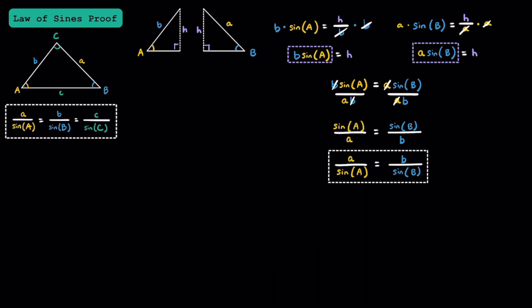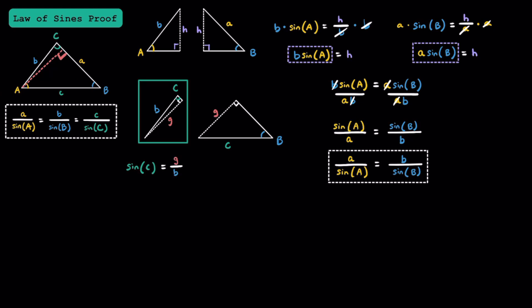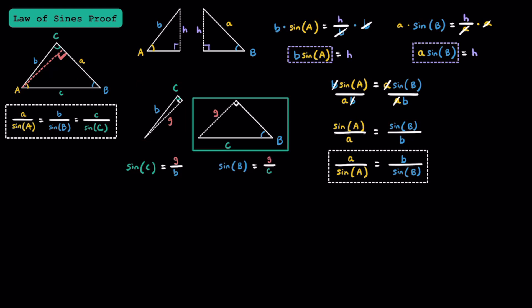Instead of splitting the triangle into two right triangles that way, let's now draw an altitude or height over here. Splitting it this way, we're going to get two right triangles again. I'm going to call the altitude G this time. Now that we have two right triangles, let's use our trig functions to write some equations. For the triangle on the left, we can write that sine of angle C is equal to G over b. And for the triangle on the right, we can say that sine of angle B is equal to G over c.